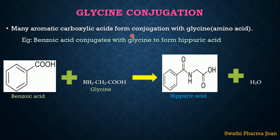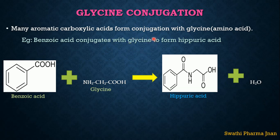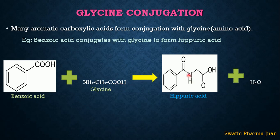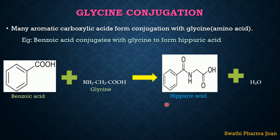Many aromatic carboxylic acids form conjugation with glycine, which is an amino acid. Most drugs containing aromatic carboxylic acid will undergo this conjugation reaction. The example given is benzoic acid conjugating with glycine to form hippuric acid. Benzoic acid reacts with glycine (NH2CH2COOH), and the hydrogen from NH2 and OH from the carboxylic acid are removed as water, forming a CONH bond. The resulting hippuric acid is a glycine conjugate metabolite.